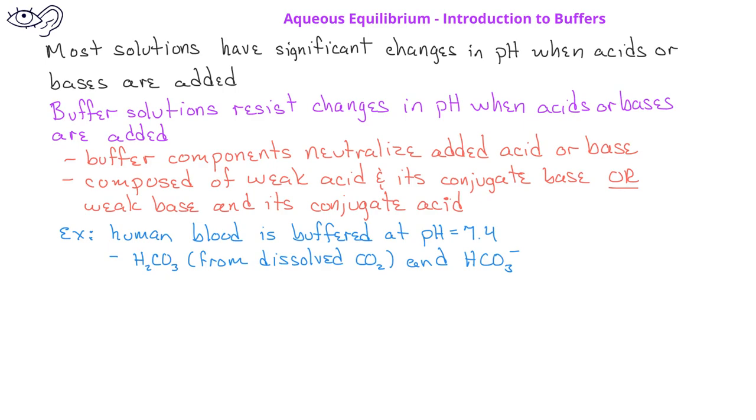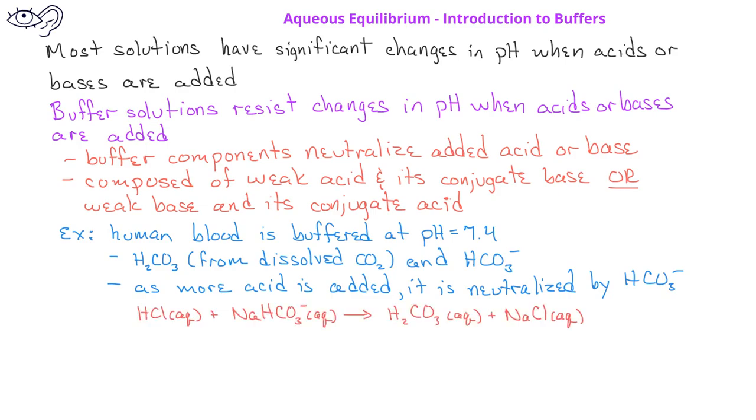As more acid is added to the blood, the base HCO₃⁻ neutralizes it. So for example, HCl can react with sodium bicarbonate aqueous to produce carbonic acid and sodium chloride.